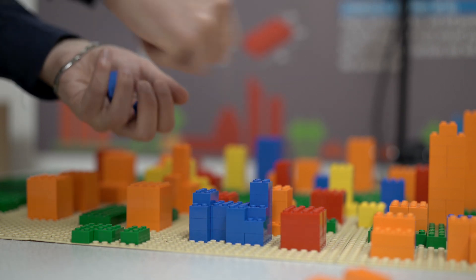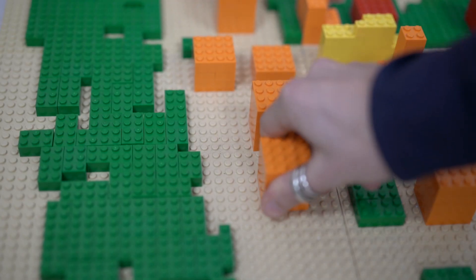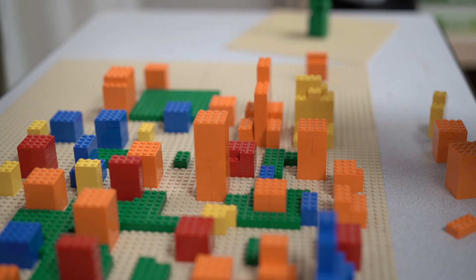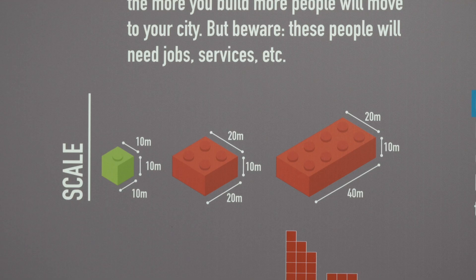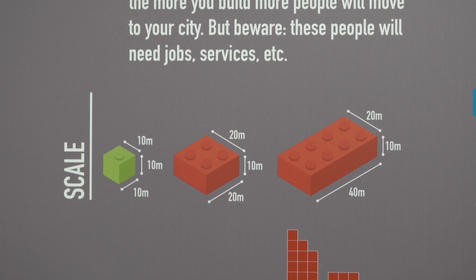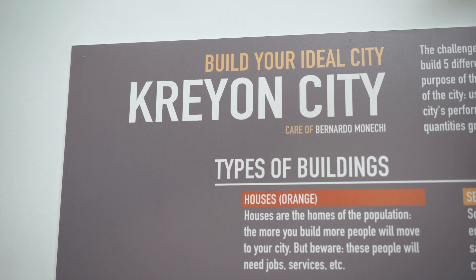Crayon City is an installation and an experiment about the evolution of a city, of a generic city. It's an installation because it allows people to interact with something physical, which is basically done with LEGO bricks. Through the LEGO bricks, people can construct a real city. And it's a real city because in front of them there is a city growing, but at the same time there are sensors and cameras monitoring the city.